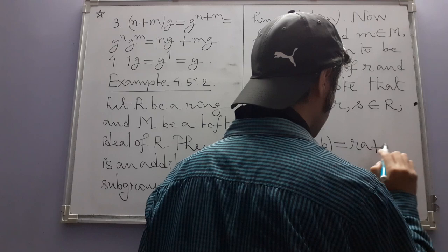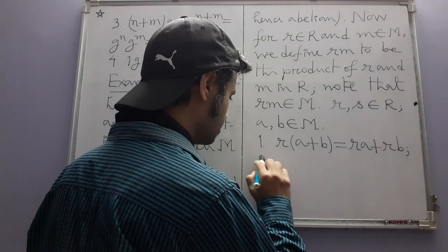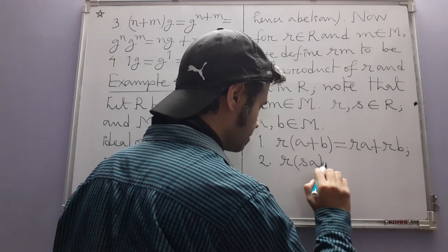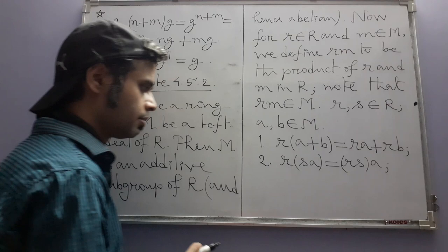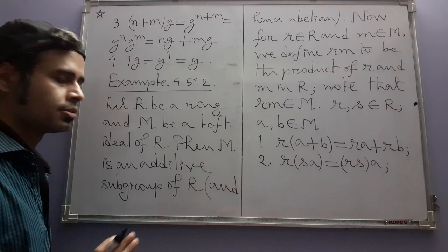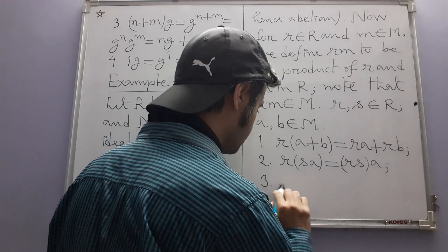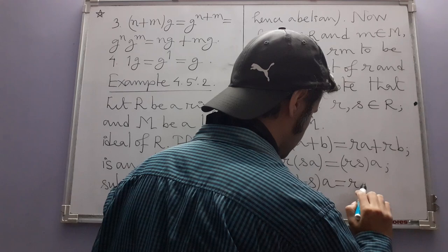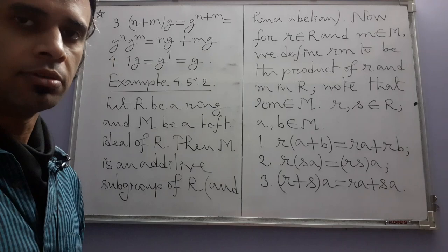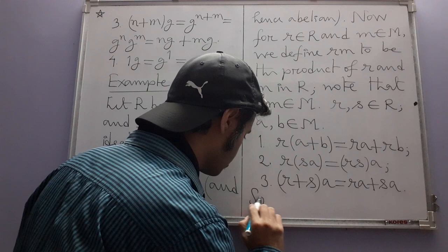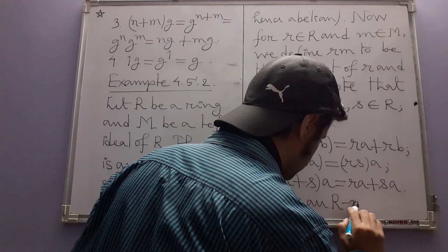For a+λ in M and r in R, we define the multiplication r·(a+λ). This is defined in a familiar manner. It turns out that with these operations, M is an R-module. Note that in Example 2 we took the left ideal itself as the set; here we take the set of cosets instead.